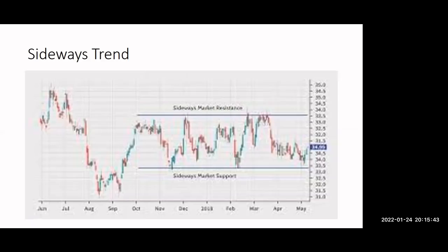I'll show you my DMAT account — this part — so there it will be more clear. The one is your sideways market resistance and the below one is your sideways market support. Because whenever we take the screenshot of this from the DMAT, sometimes it is not clear. So that's why it is not showing clearly, because these are the things that we can get only in a DMAT account.